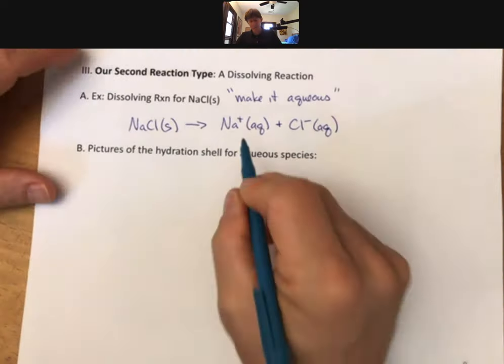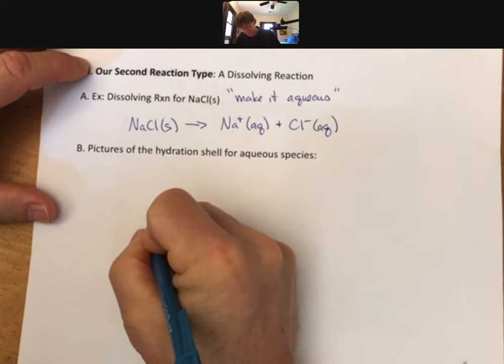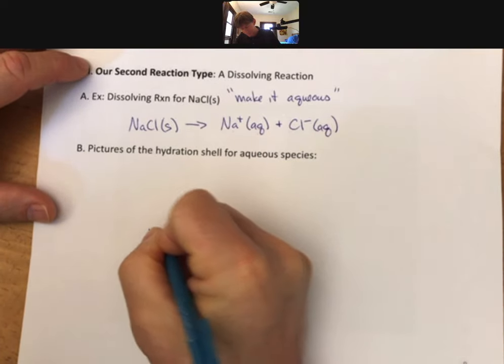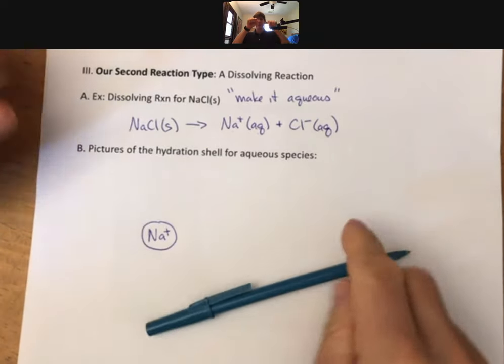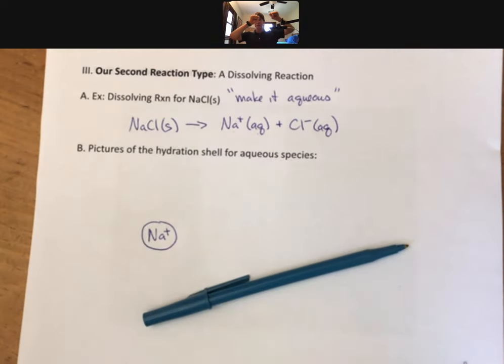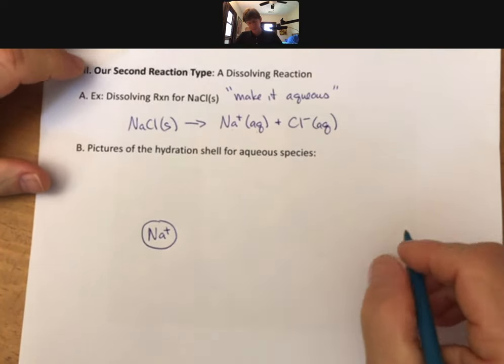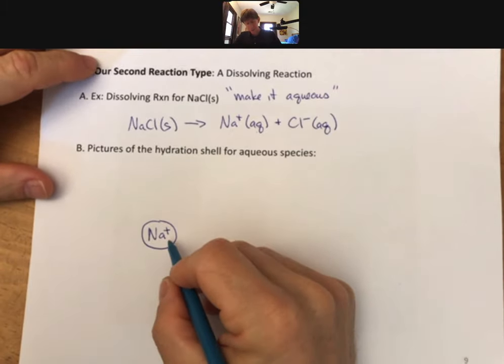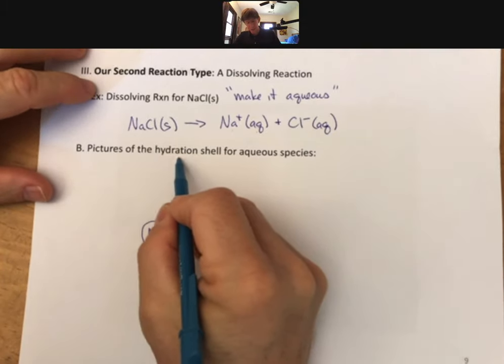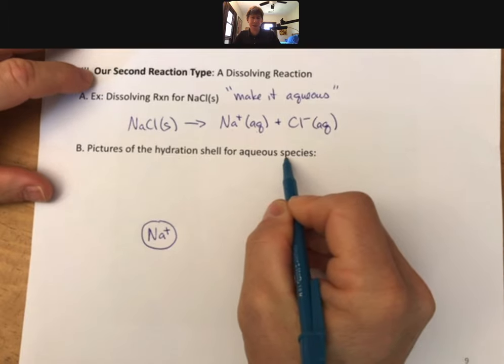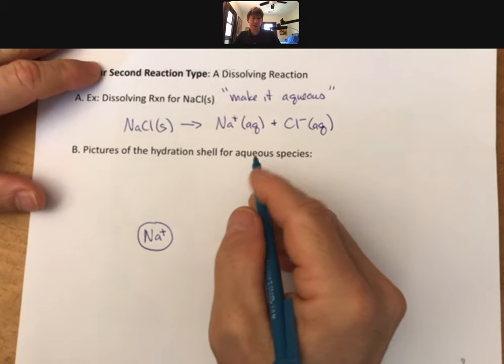So let's look at a sodium ion. That sodium ion is floating around in solution, an aqueous solution with chloride ions as well. But now, before I draw the rest of this, what's called a hydration shell for aqueous species, we have to talk a little bit about water.